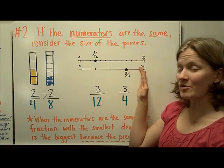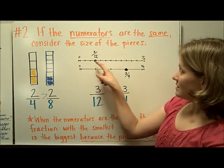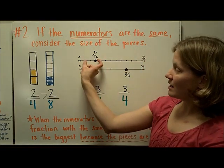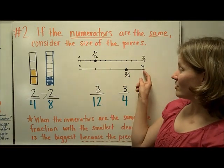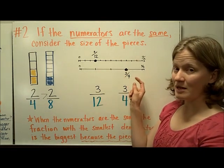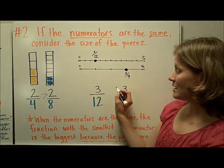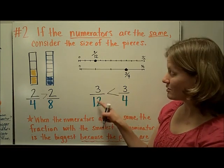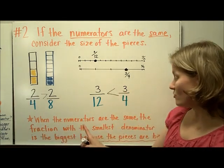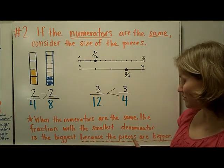You can also picture this on a number line model. We have three-twelfths compared to three-fourths. This number line is broken up into twelfths, and we have three of those twelfths, which are small pieces. Here, we have a number line broken up into four pieces, and those three pieces are big pieces because the denominator is small — small denominator, big pieces. So three of these big pieces is going to be bigger than three of the little pieces. So three-twelfths is less than three-fourths. In summary, when the numerators are the same, the fraction with the smallest denominator is actually the biggest because the pieces are bigger.